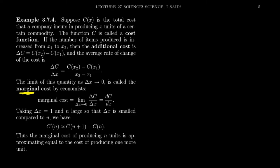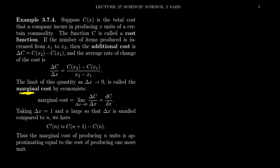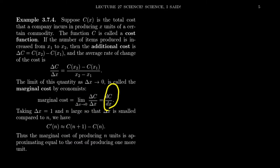Why the word 'marginal'? Think of a piece of paper — the margins are a very small region. A marginal cost is a very small change to the cost function, which is exactly what the derivative measures: this infinitesimal change. So marginal cost is the limit as delta x approaches zero of the average rate of change of cost, delta C over delta x, and we denote this dC/dx — the derivative of cost with respect to production.